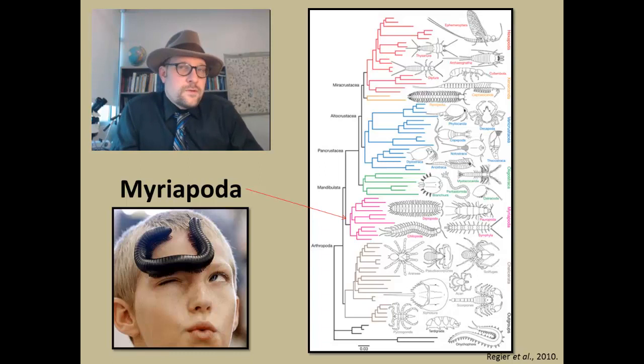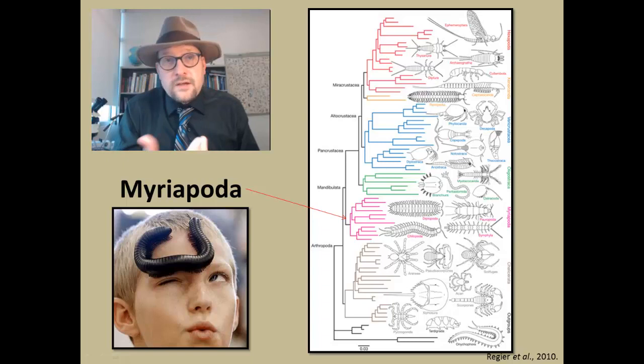The Myriapoda have been removed as a sister group to the Hexapoda based on molecular phylogenies that place the Crustacea as more closely related to the Hexapoda. This phylogeny indicates that the Hexapoda and Myriapoda independently came out of the water during the Paleozoic to diversify on land, so you have two groups that come out of the waters and become specialized to live on land.